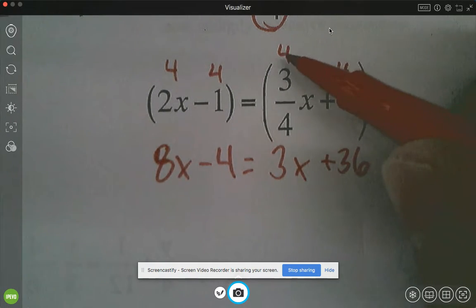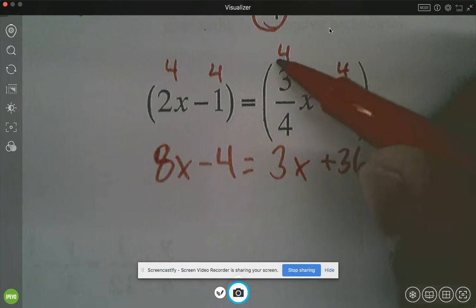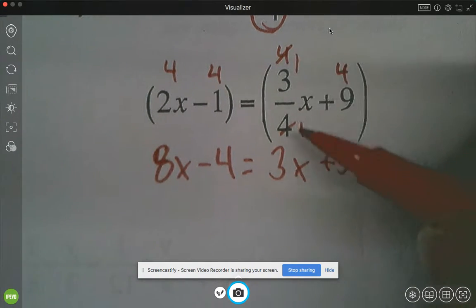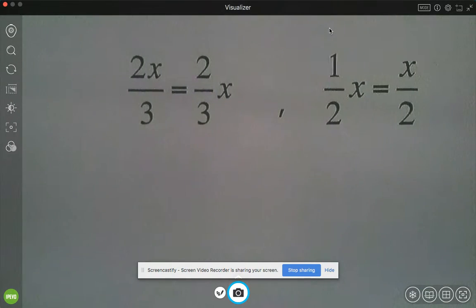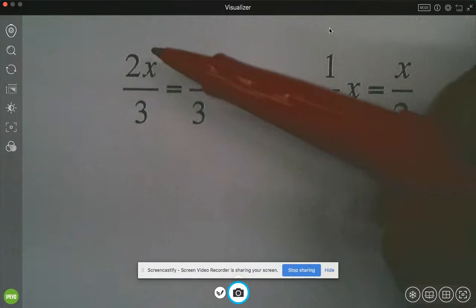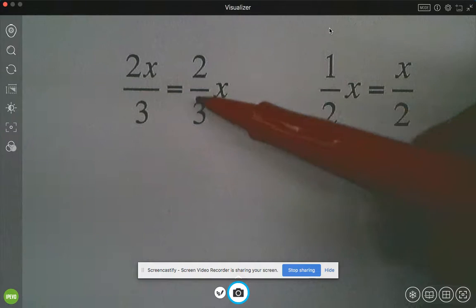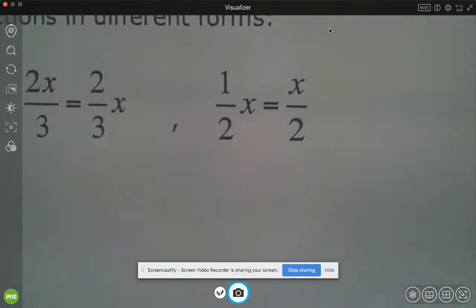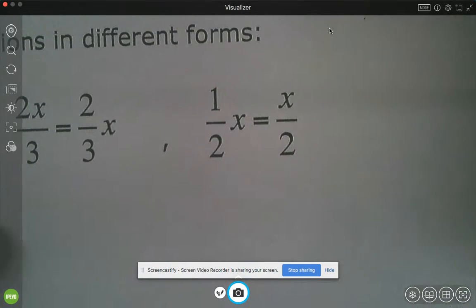Again, how do I do that? 3 times 4 is 12, divided by 4 is 3. Where you cross simplify and make these 1s, you still get 3x. One thing you'll see in some equations, just to show you that it's the same thing. So if you have 2x over 3, it's really the same as 2 thirds x. Same thing if you have, reverse it, 1 half x, you could really just write that as x over 2.